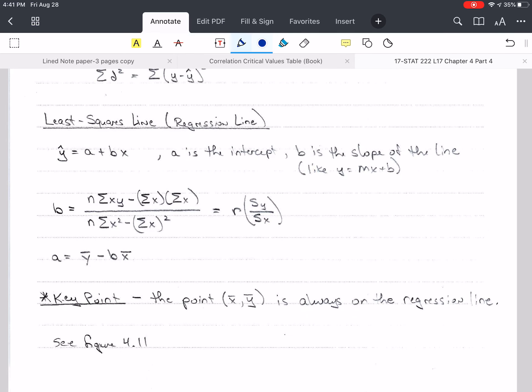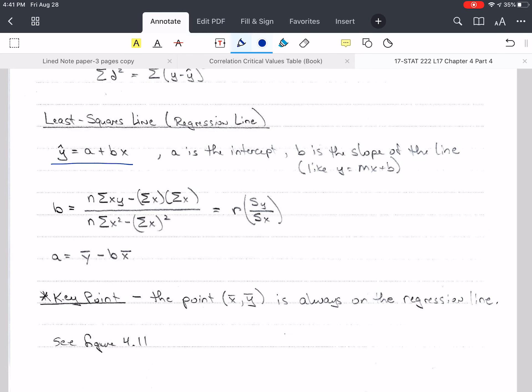The least squares equation is given by y hat equals a plus bx. a is the intercept. The intercept is where the line crosses the y-axis. Then b is the slope of the line. This is similar to y equals mx plus b, but we've mixed it up. Here, m becomes b, and b becomes a. So it's a little confusing, but this is supposed to be a straight line.